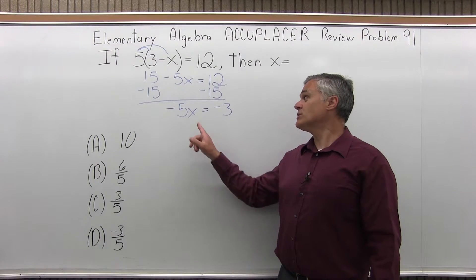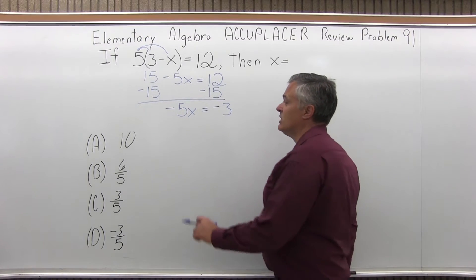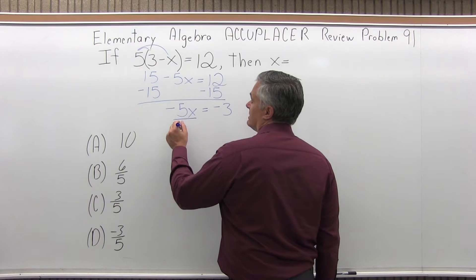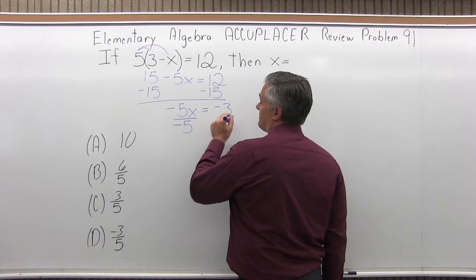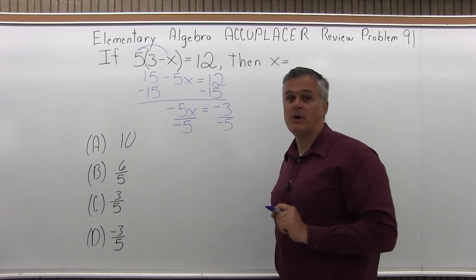Now, I'm a little closer, but I want to know what x is, not what minus 5x is. I want to get rid of the minus 5. So what I'm going to do is divide both sides by minus 5. Not just 5, but minus 5. I have to take care of the minus also.